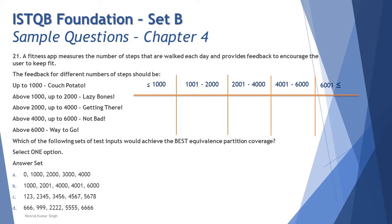For Option A — values 0, 1000, 2000, 3000, 4000: 0 and 1000 both fall in class 1; 2000 falls in class 2; 3000 and 4000 both fall in class 3. So Option A covers three partitions out of five. For Option B — values 1000, 2001, 4000, 4001, 6000: 1000 is class 1; 2001 is class 3; 4000 is class 3; 4001 is class 4; 6000 is class 4. Option B also covers three partitions — first, third, and fourth — with no value in class 2 or class 5.